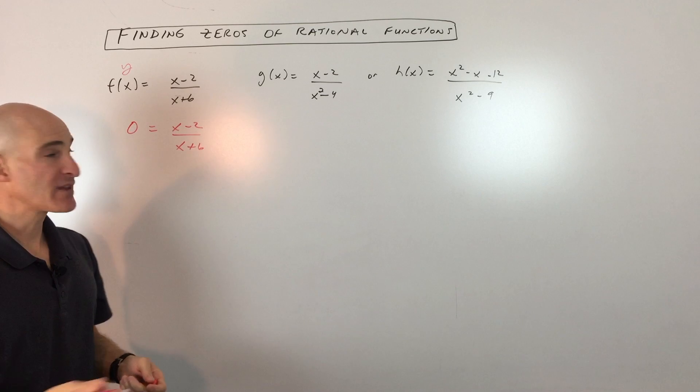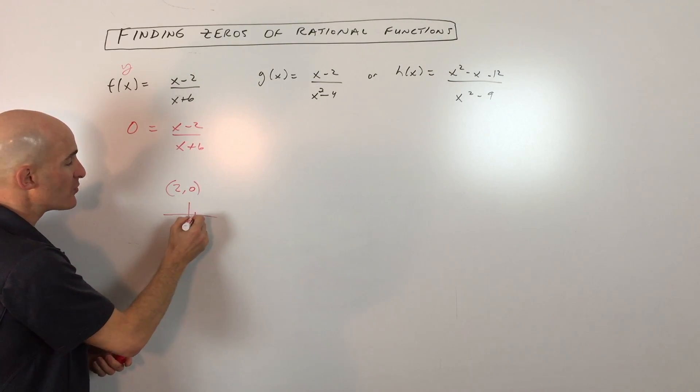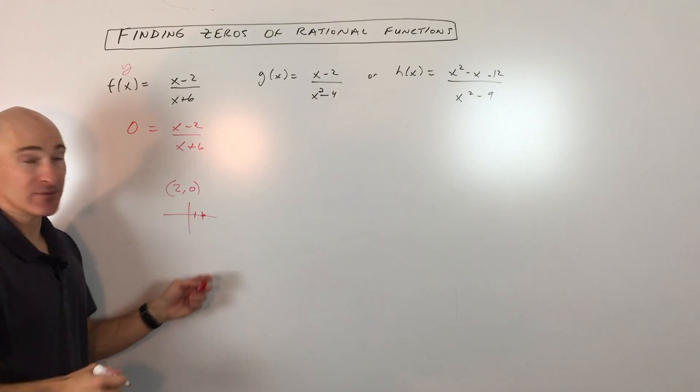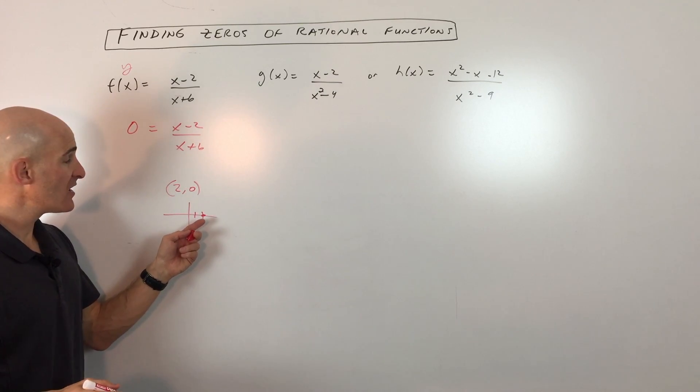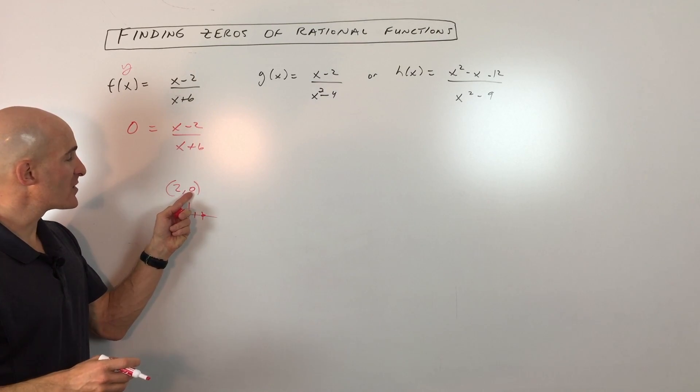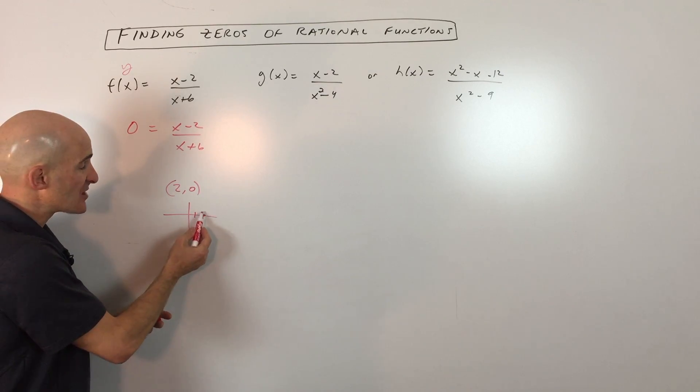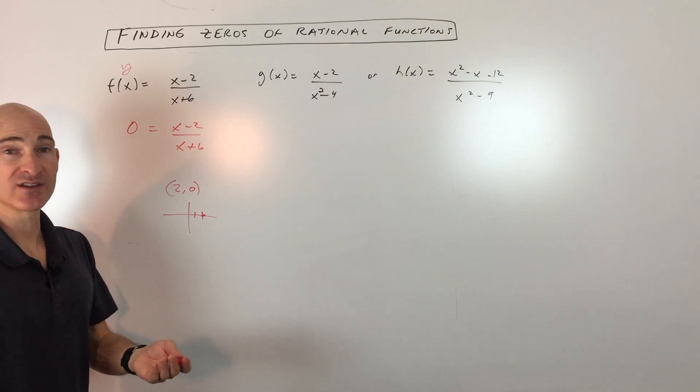When we talk about zeros, that means the y-coordinate is zero. So 2 comma 0 means that's an x-intercept. It's a root, a solution, an x-intercept, a zero. These terms are used interchangeably. Basically a zero means y is zero, and the reason it's an x-intercept is because you're not going up or down, you're just going right, but the y-coordinate is zero.